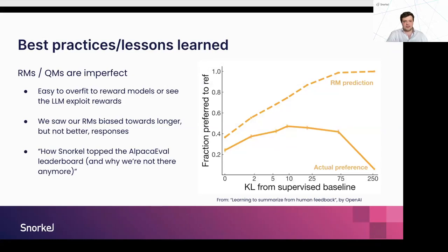Before moving to the data side, I wanted to share one lesson we learned earlier this year — and you can read more on our blog post. We wanted to use reward models to provide signals to generate preference datasets: chosen rewards should have a high score, rejected rewards a low score, then use that for DPO. However, reward models carry the risk of overfitting. They're an imperfect representation of what a human would assign. We found our reward model really liked long responses — responses weren't getting better over time if a human were to look at them, but they were getting longer, and the LLM-as-a-judge score would go up. One lesson: never fully trust your reward model.